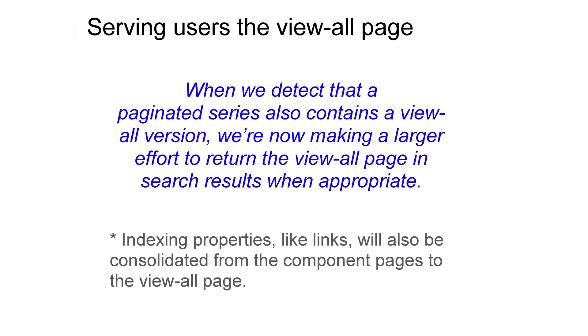Given this knowledge, one of our engineers on indexing, Benja Lee, came out with a new feature in October of 2011. When we detect that a paginated series also contains a view-all version, we're now making a larger effort to return the view-all page in search results when appropriate. That's great for searchers. And what's even better for webmasters is that while we detect this view-all page, we'll also consolidate indexing properties like links to the view-all page. So this is good for searchers and good for you as webmasters for all that indexing consolidation.